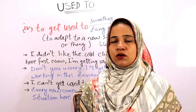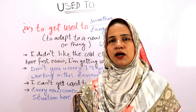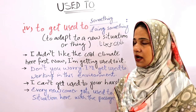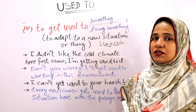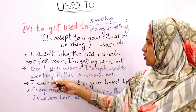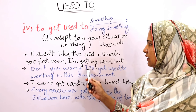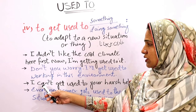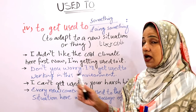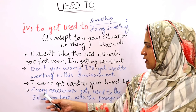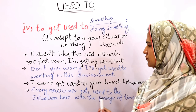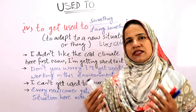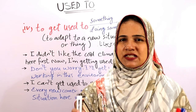This expression can be used in all tenses. In the first example, 'I'm getting used to it' uses present continuous tense. 'I'll get used to working in this environment' uses simple future tense. 'I can't get used to your harsh behavior' uses this expression with a modal verb. 'Every newcomer gets used to the situation' uses simple present tense. So this expression can be used in a number of situations and in all tenses.